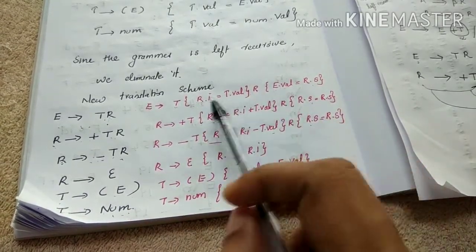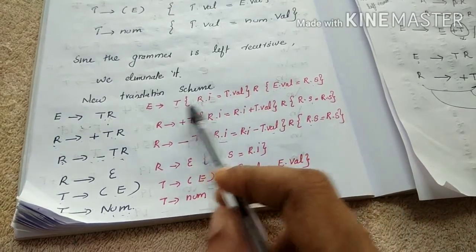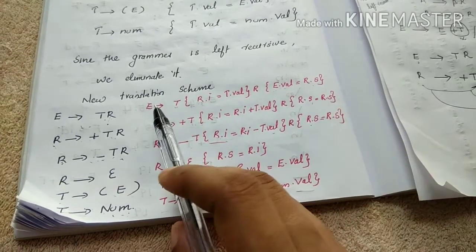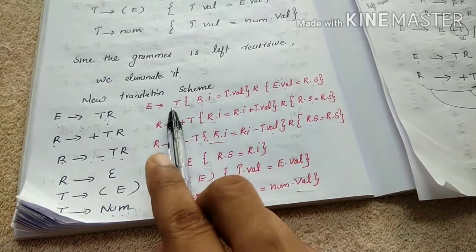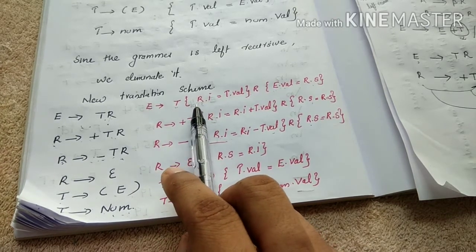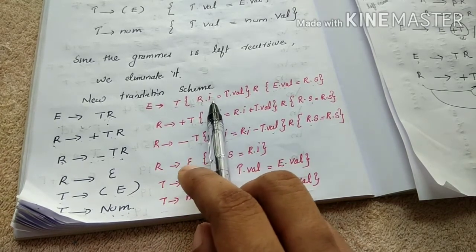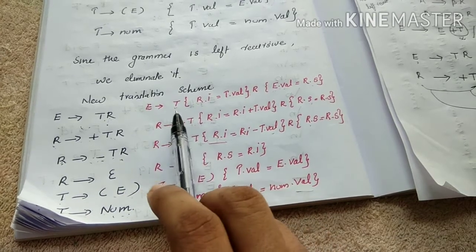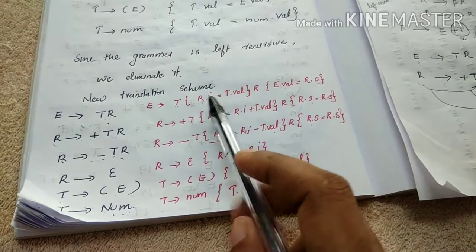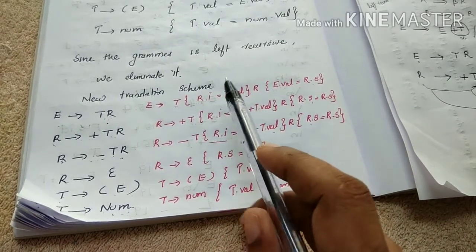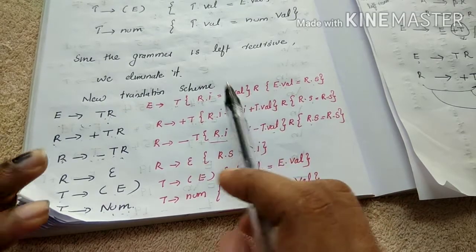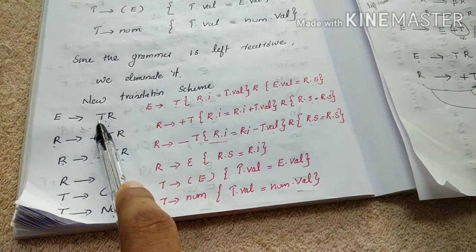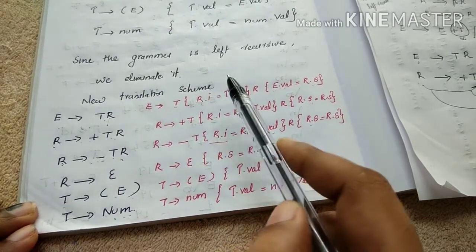Semantic action is placed anywhere between the right-hand side. This is the semantic action. R.i equals T.val. This is the attribute of R.i — this is the inherited attribute, the major attribute. R.I is for Inherited, indicated as R.I.